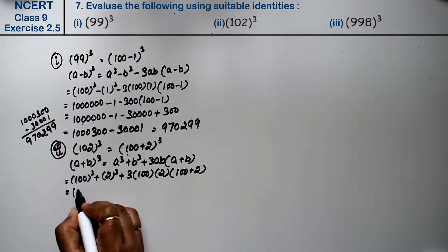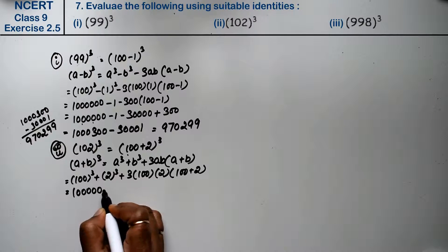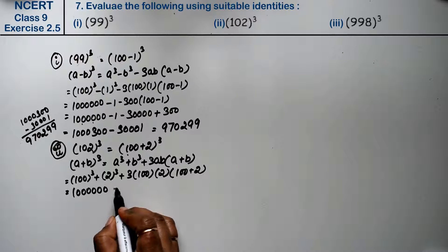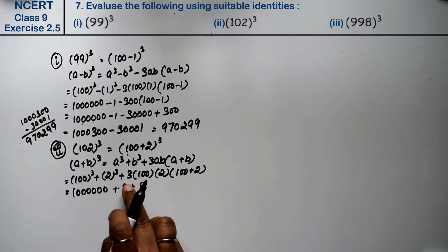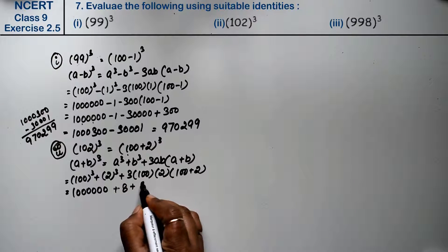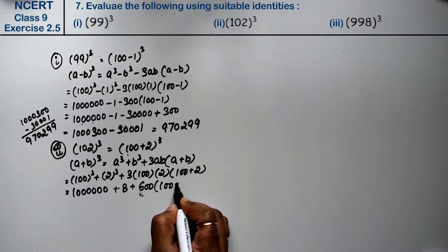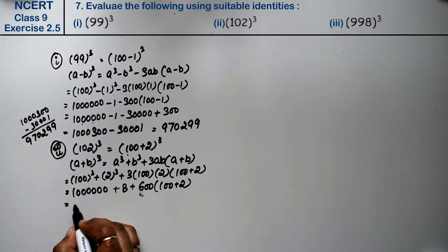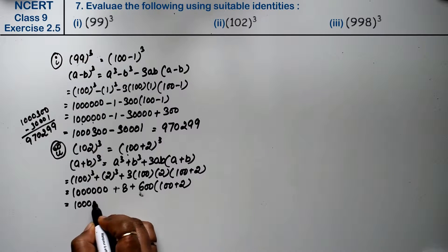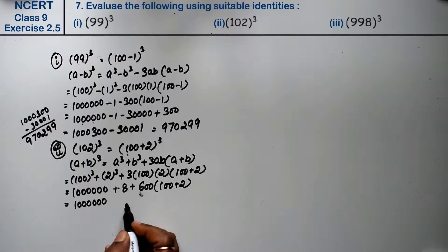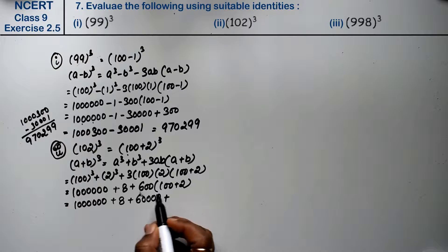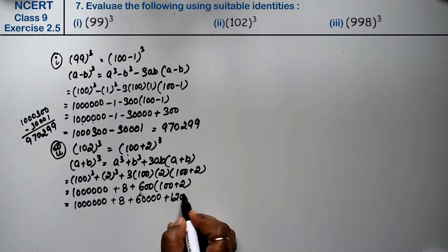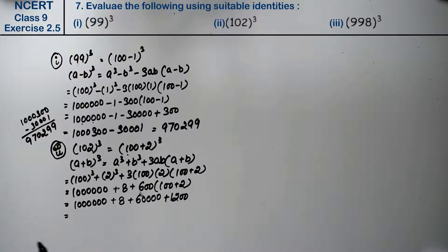So: 100 cube plus 2 cube plus 3 into 100 into 2 times (100 plus 2). 100 cube has six zeros: 1,000,000. Plus 2 cube is 8. Plus 300 — then 3 into 2 is 6, so 600 into (100 plus 2). That gives 600 into 100 is 60,000, plus 600 into 2 is 1,200.